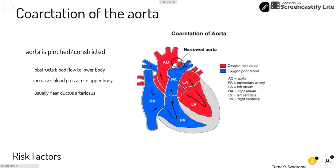It makes it hard for the heart to pump blood to the lower body because blood has to pass through this narrow part in order to get down to the lower body. It also increases blood pressure in the upper body because the lower body isn't getting enough blood with oxygen and nutrients. The heart has to pump harder to try to get enough blood down there, so all the parts of the body above the narrowed part have an increased blood pressure.